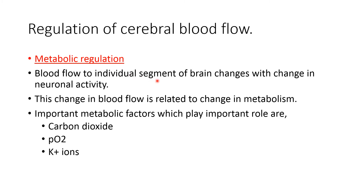In metabolic regulation, blood flow to individual brain segments changes with neuronal activity, linked to changes in metabolism. For example, while reading, blood flow to the occipital area increases; while making a fist, blood flow to the motor cortex of the opposite side increases. The important metabolic factors are carbon dioxide, partial pressure of oxygen, and potassium ions. Increased metabolism raises CO2 and potassium ions, and decreases oxygen partial pressure — all acting as vasodilators increasing blood flow to that segment.